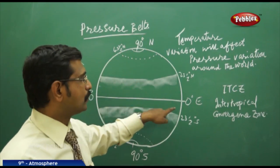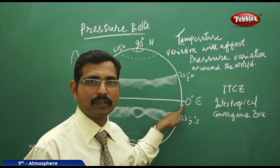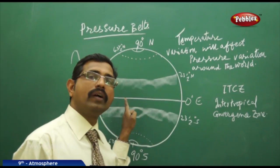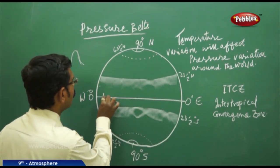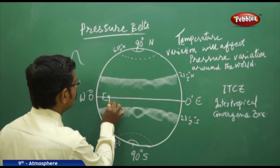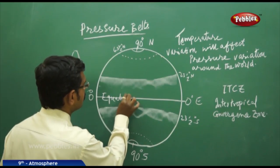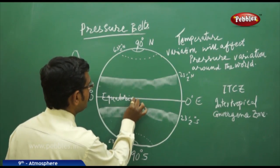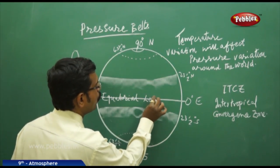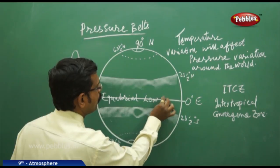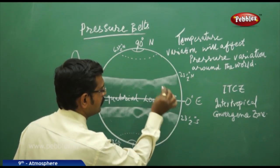Taking the equator into consideration, this zone is coined as the equatorial low pressure belt.